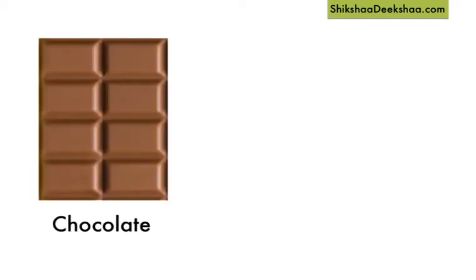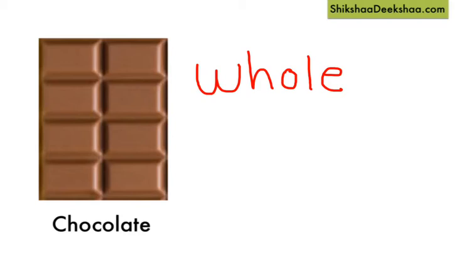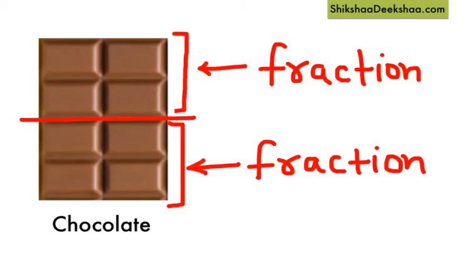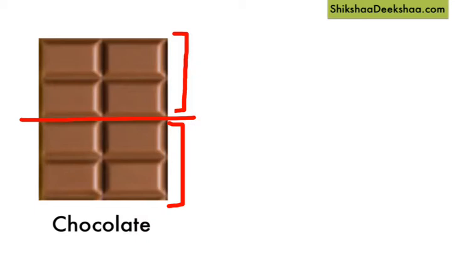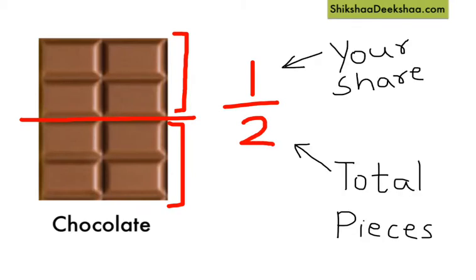If you want to eat all of it, you say you want to eat the whole chocolate. But if you want to share it with your friend and divide it in half, then each portion is a fraction of the full chocolate. You break the chocolate into two pieces and write the fraction for each piece as one by two. Here, two is the number of total pieces and one piece is your share.